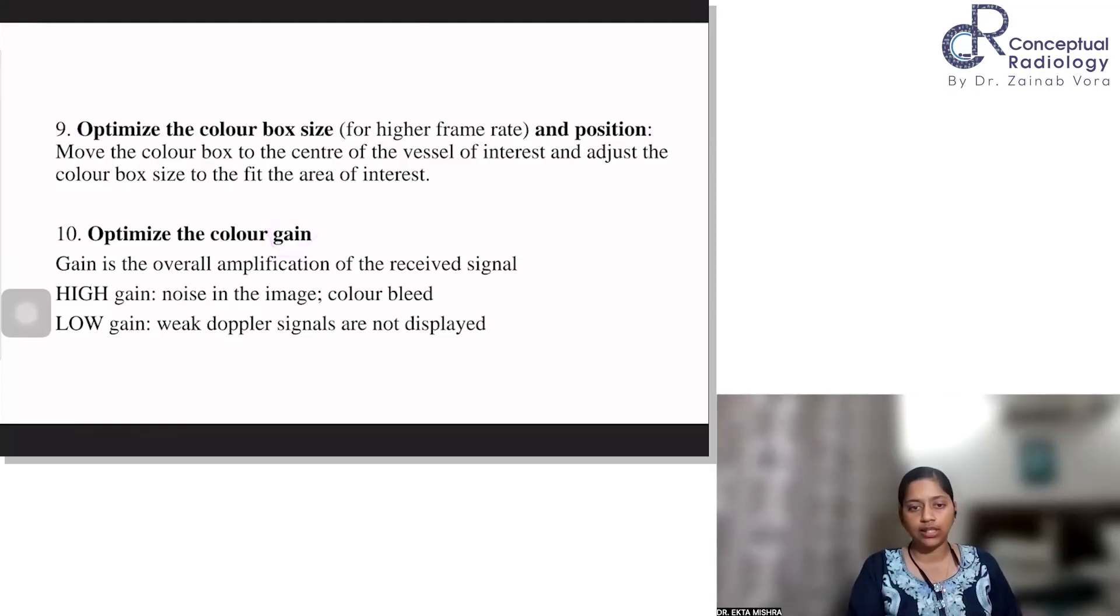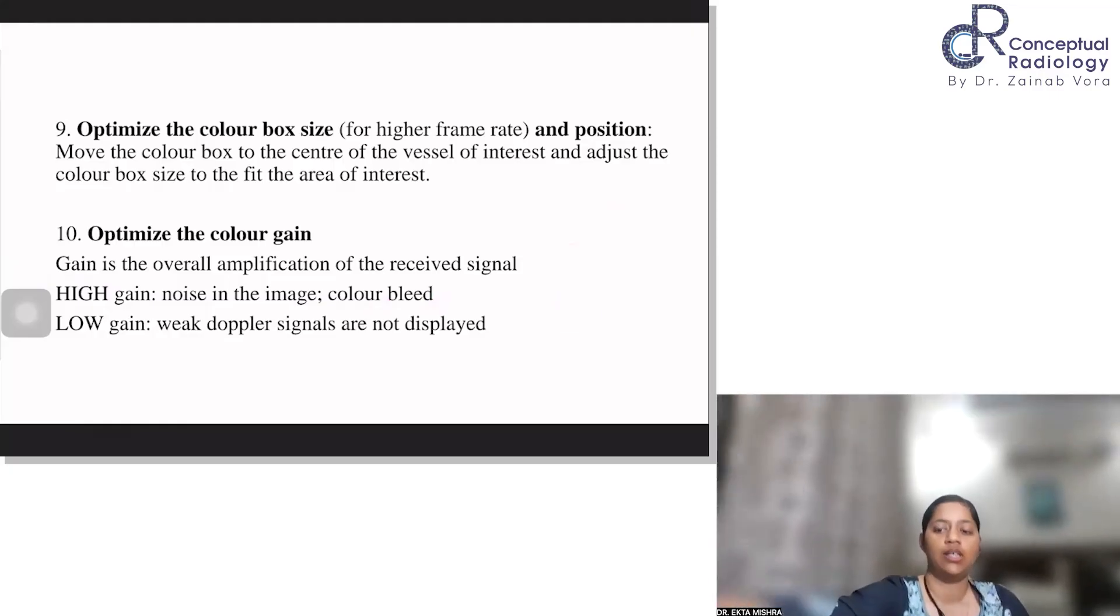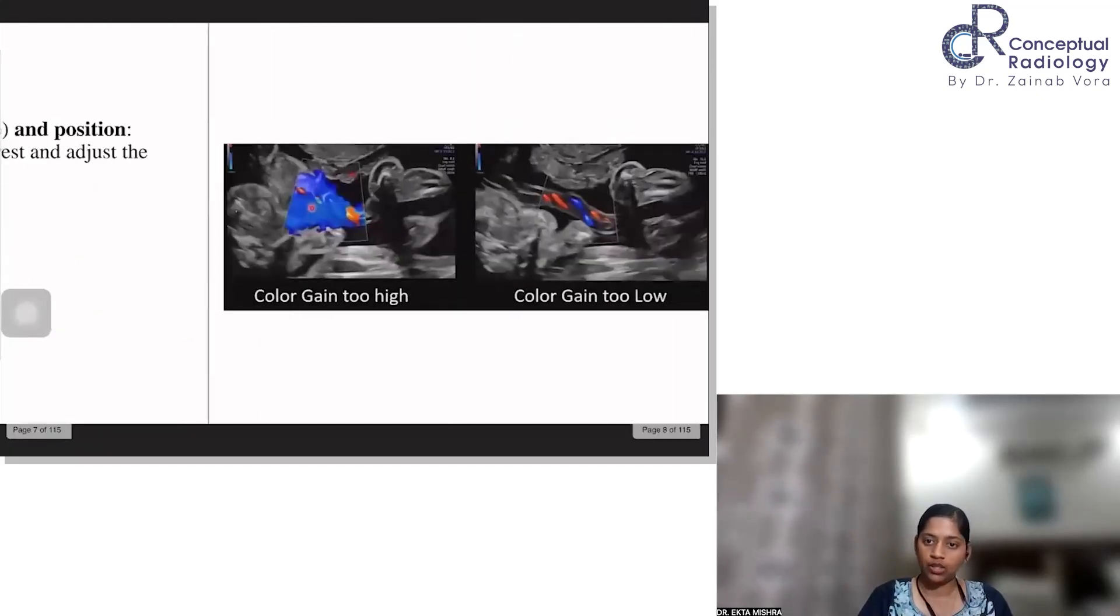Then the gain. As you do for B-mode imaging, optimize the color gain accordingly. Just turning the knob would adjust the gain. Gain is basically the overall amplification of received signals. So if you're receiving this signal, when you turn on the knob for color, the signals would be amplified and hence you will see them more clearly. But if you have very high gain, then there will be noise in the image and the color will start bleeding out of the vessel. And if your gain is low, then the weaker Doppler signals would be left out. So you have to mix and match and adjust accordingly.